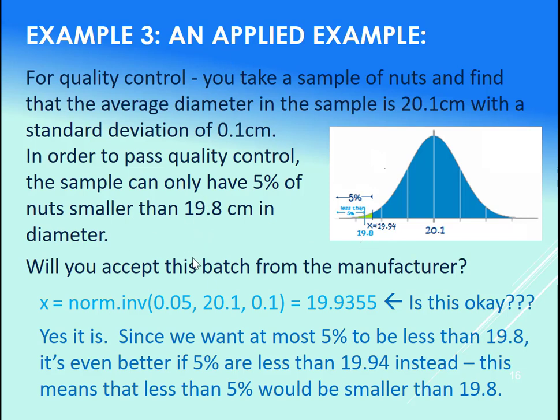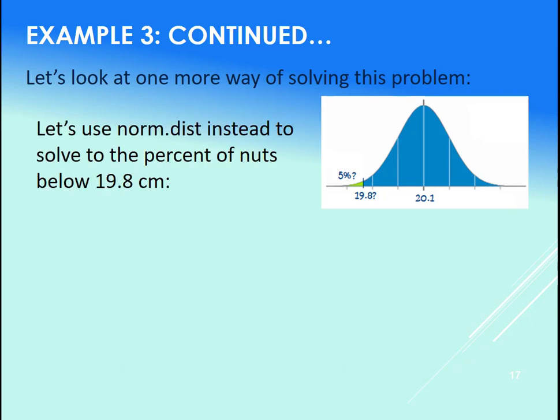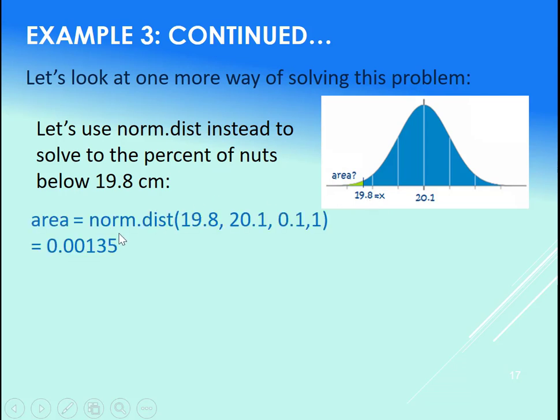Now let's look at this example, this quality control example in a different way as well. You can pick whichever way you prefer to solve this problem. So let's think of it in a different way here. Let's think of it instead with the norm.dist. Let's look for this area and let's set our x value to 19.8. So let's see what percentage of the nuts are less than 19.8 in diameter.